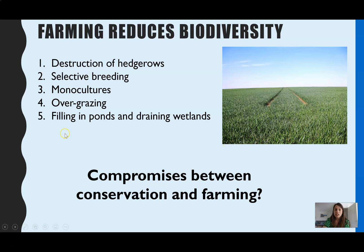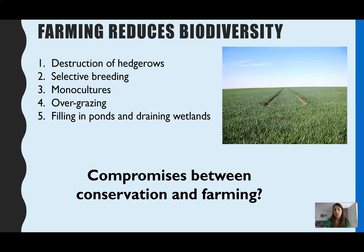You could get exam questions linked to these compromises. Instead of destroying all hedgerows, there might be an agreement to remove only some but not all. For selective breeding, it might be restricted to a particular area or species. For monocultures, there could be crop rotations — rotating which crop is grown each year — or having rows of different species within the same field. So there's a range of different compromises.